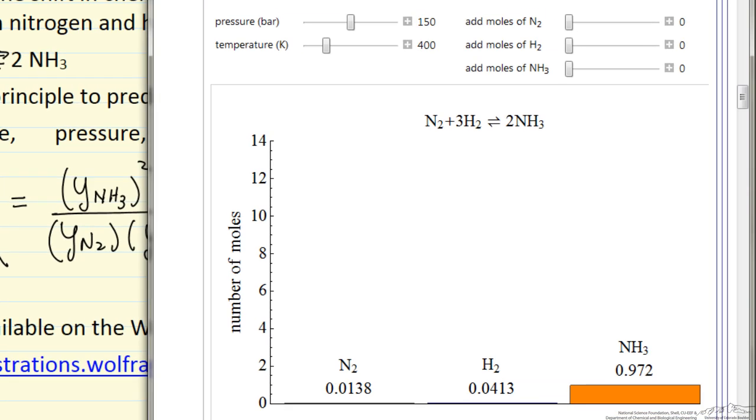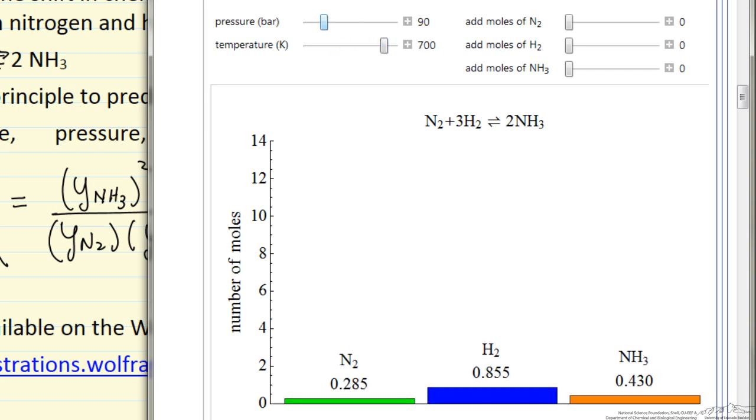As we raise the pressure, you'll notice we're making more and more ammonia. Maybe I should do this at high temperature to make it easier to see. Now as I raise the pressure, you can see we're making more ammonia and less nitrogen and hydrogen, again, what we would predict from Le Chatelier's principle.